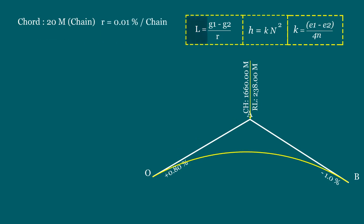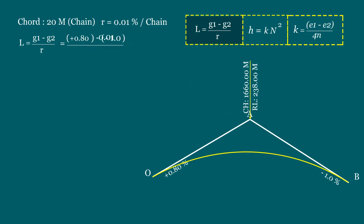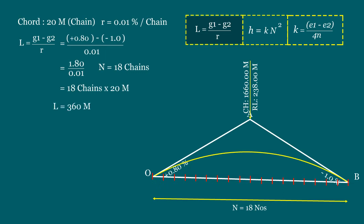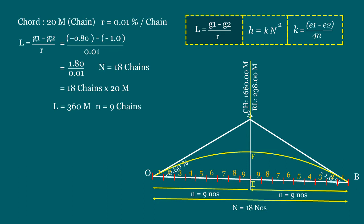First, we will calculate the total length of the curve. The length L equals (G1 minus G2) divided by R. Here G1 equals +0.8% and G2 equals -1%, and the rate of change of grade per chain equals 0.1%. So the length of the curve equals 1.80 divided by 0.1, which equals 18 chains — known as N. This equals 18 chains × 20 meters = 360 meters. The length of the curve at either side of the apex equals 9 chains, which equals 180 meters.